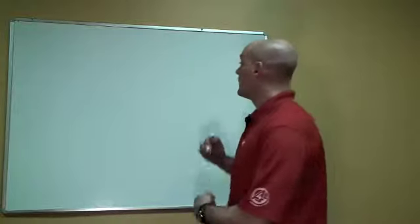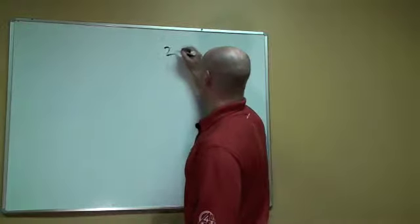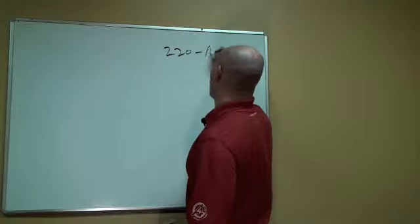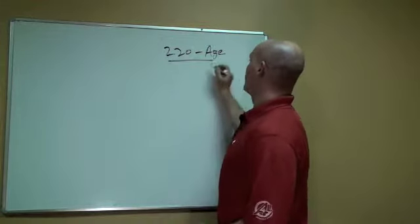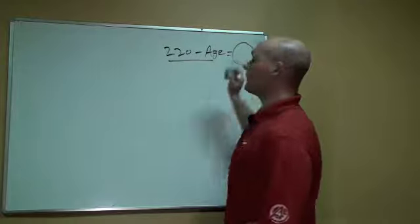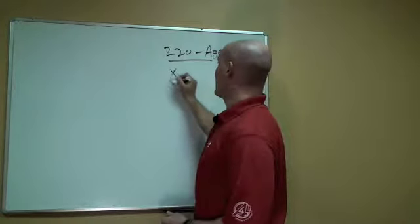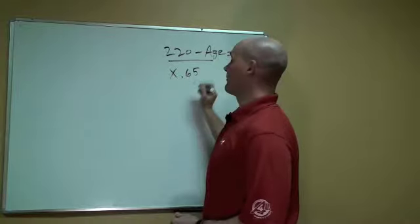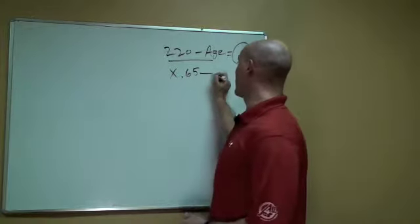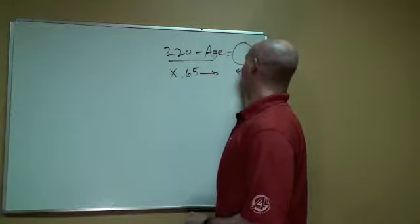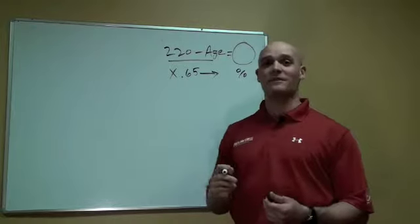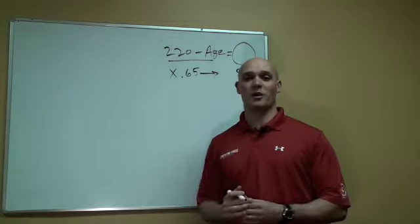To figure that out, simply calculate 220 minus your age. That's going to give you a number. Whatever that number is, you're going to take it and times it by .65. When you times it by .65, that is going to give you a percentage—actually 65% of your maximum heart rate. This is your low zone.